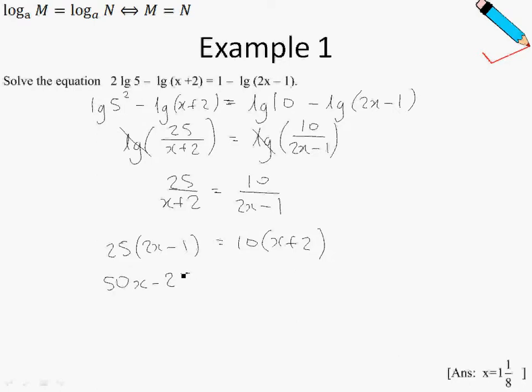So simplifying this, we get this. And then, if I shift my 10x to the left and my negative 25 to the right, I'll get this. And dividing both sides by 40, I will just get x equals to 1 and 1/8.